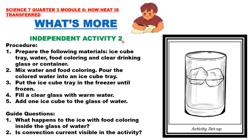Independent Activity 2. Procedure: 1. Prepare the following materials: ice cube, tray, water, food coloring, and a clear drinking glass or container. 2. Mix water and food coloring, then pour the colored water into an ice cube tray. 3. Put the ice cube tray in the freezer until frozen. 4. Fill a clear glass with warm water. And 5. Add one ice cube to the glass of water. Guide questions: 1. What happens to the ice with food coloring inside the glass of water? 2. Is the convection current visible in the activity?